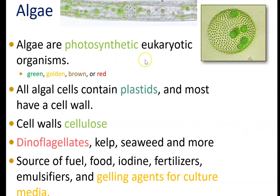Algae are photosynthetic. They can come in lots of different colors because they have lots of different photosynthetic pigments. All algal cells contain plastids, and almost all of them have cell walls. Most of their cell walls have cellulose.